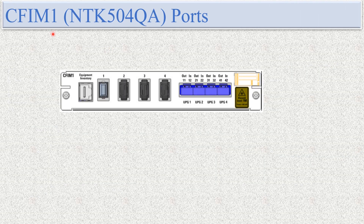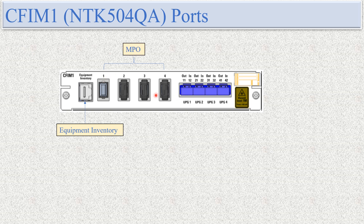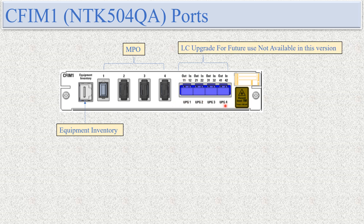You can see here the CFM1 ports. This is the equipment inventory. One, two, three, four — these four are the MPO ports which are used to interconnect the RLA modules. There are also four upgrade ports — upgrade port one, two, three, four — but these are not currently in use and will be used in the future. We will focus on these four MPO ports and how they are connected internally and to external equipment.